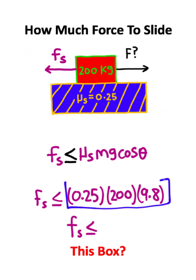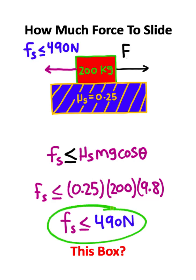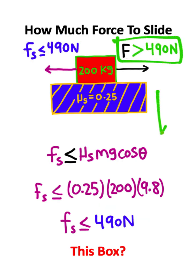So if you take these numbers and throw them into a calculator real quick, you should get a value of 490 newtons. So the threshold for static friction is 490 newtons, which means you need to apply greater than 490 newtons of force to get this box to move.